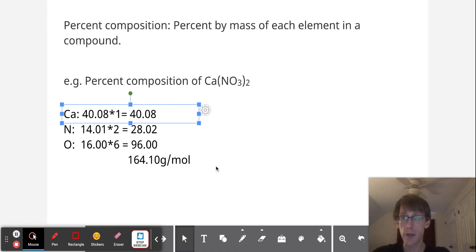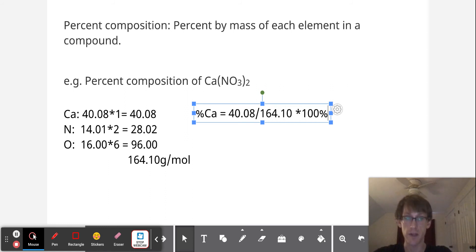So the next thing that we'll have to do is figure out, okay, out of this whole 164-ish grams, what part, what percent is that 40? So what we can do is next take, I'll move this over here. We'll say percent Ca is equal to 40.08 divided by 164.10 times 100%. And that equals 24.42%.